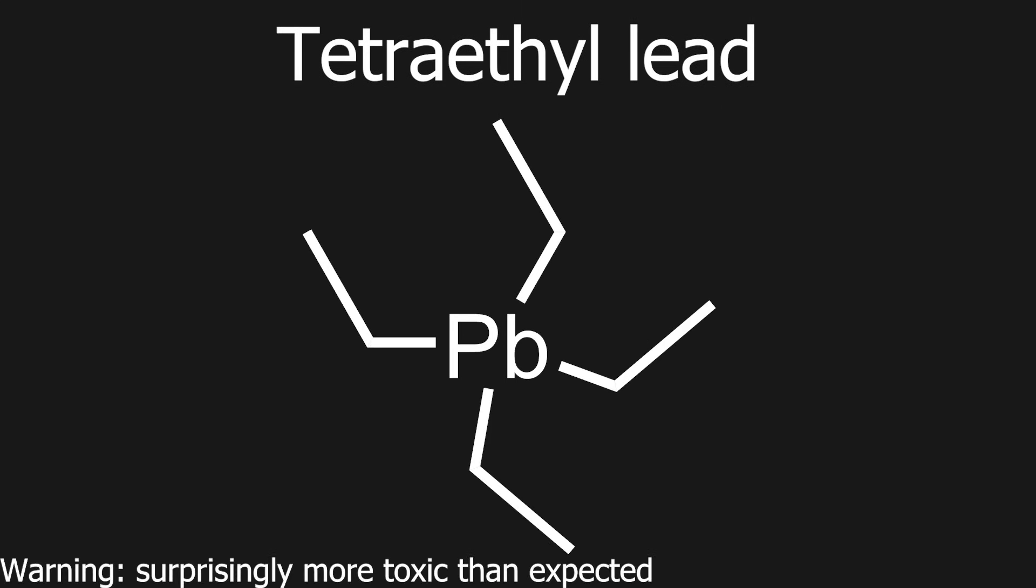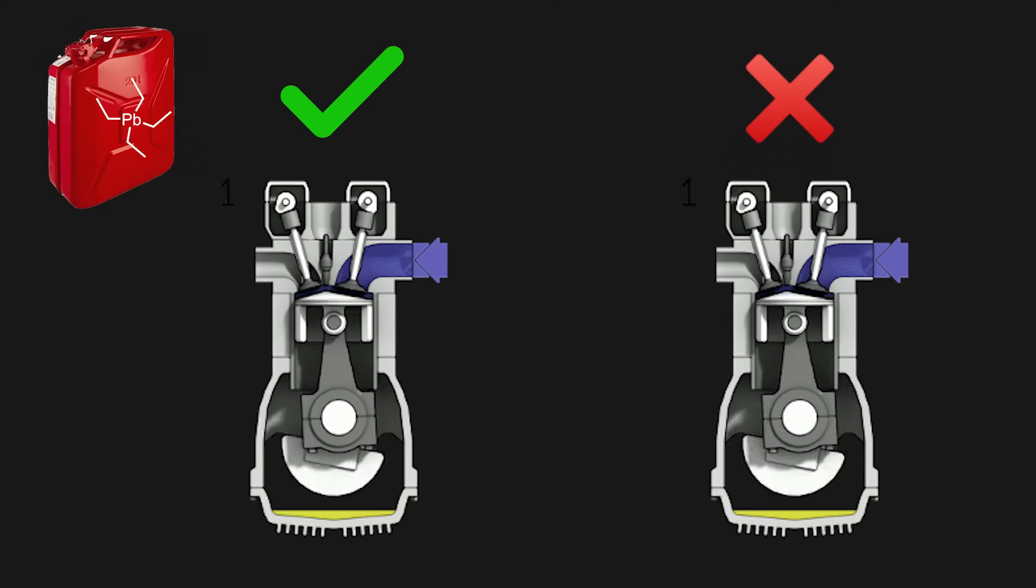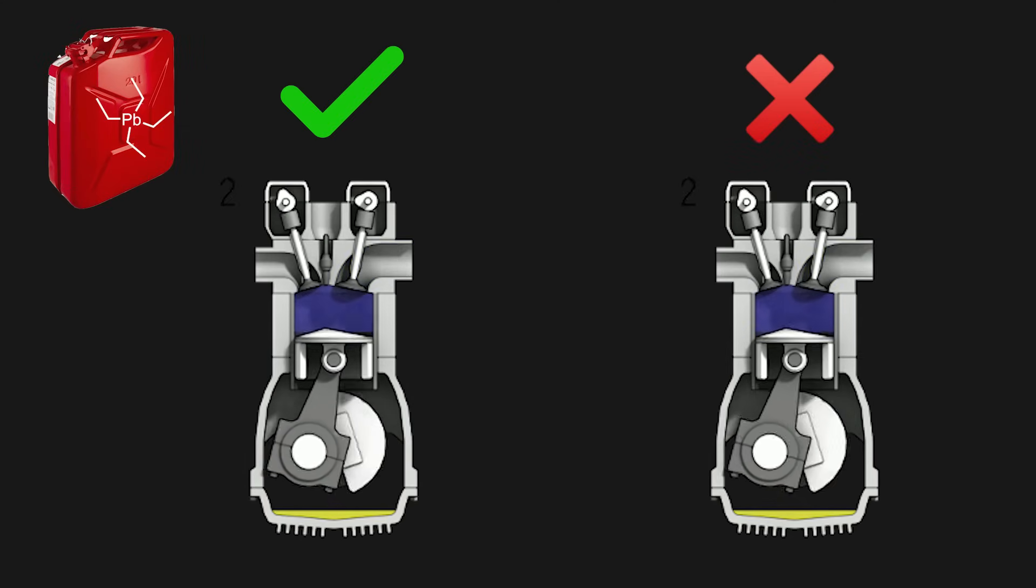In this video, I will be making tetraethyl lead. Tetraethyl lead used to be a common additive to gasoline. It serves as an anti-knocking agent, which reduces engine knocking and increases the octane rating of the fuel.